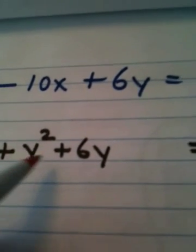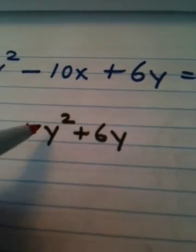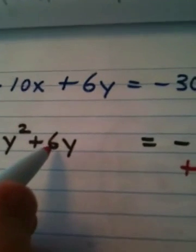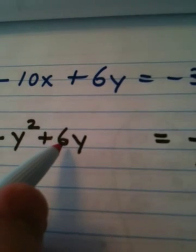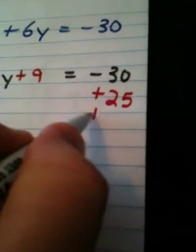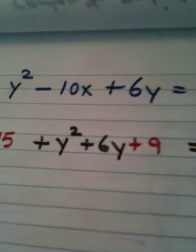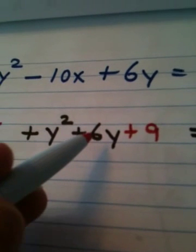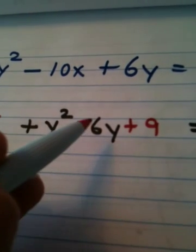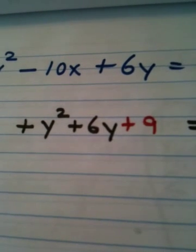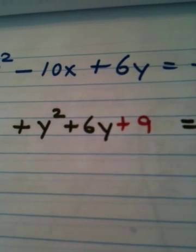Okay, let's look here. We want to complete the square here also. Make sure the leading coefficient is a 1, which it is. Half of 6 is 3. 3 squared is 9. What I add to one side, I add to the other. One more time. Half of 6 is 3. 3 squared is 9. That's called completing the square.